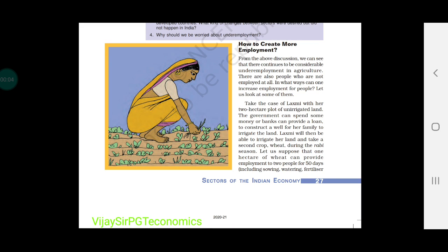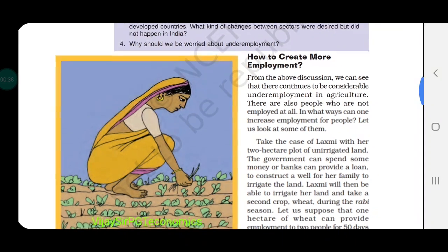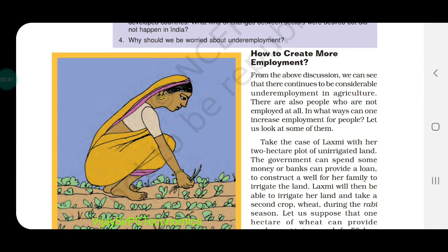Good morning everyone. Today we are going to discuss the remaining half part of the chapter — the chapter name is 'Sectors of the Indian Economy.' We are starting with page number 27 in the PDF or the book. The topic is how to create more employment. Last time we discussed disguised unemployment and underemployment situations in India.